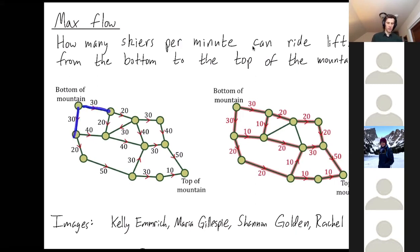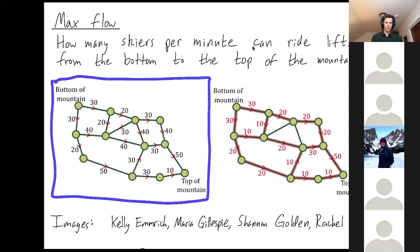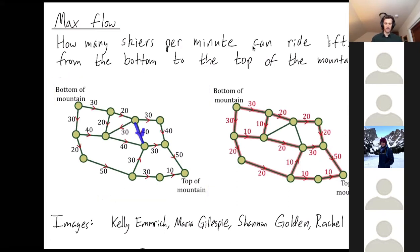The directions tell you which way the lifts are going, so they're all going uphill. The number on each edge tells you how many people can ride that ski lift per minute. So this edge, 30 people can ride that lift per minute. Here are our constraints on our lifts, how fast our lifts go, how many people our lifts can take. The question we want to answer is what's the maximum amount of people we can get to the top per minute.